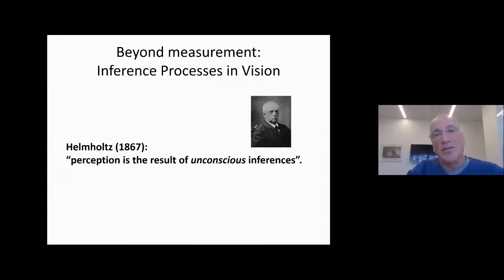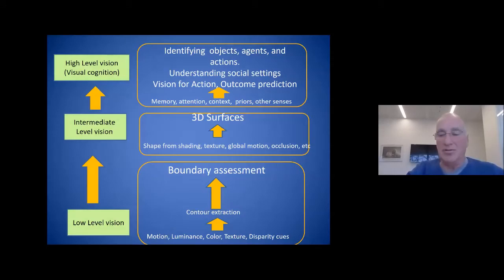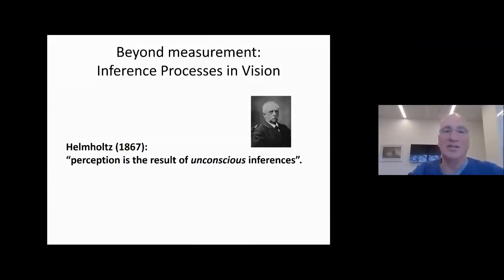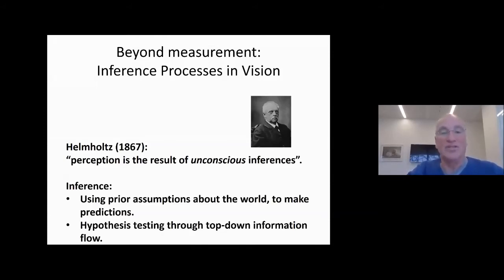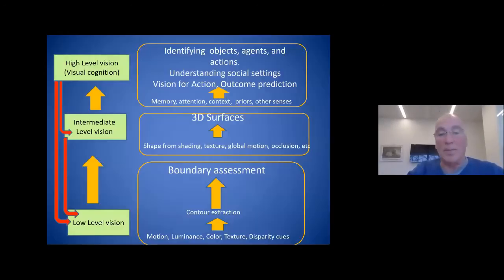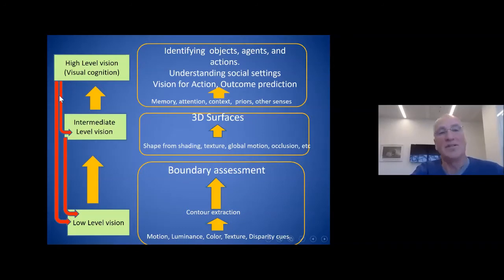Beyond measurement — up to now I was talking about a bottom-up process moving from low-level to high-level vision — but obviously there's also feedback. This is done via inference processes, which Helmholtz already mentioned. Helmholtz mentioned that perception is the result of unconscious inferences, and that when one talks about inference, one should think about using prior assumptions about the world to make predictions and using hypothesis testing through top-down information flow. These red lines show information stemming from high-level areas going back to lower levels in the form of feedback to make sense of the visual image.